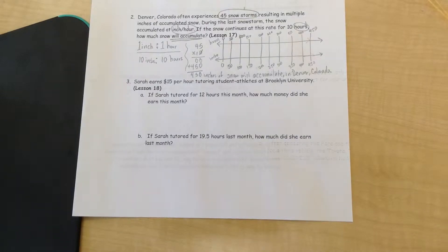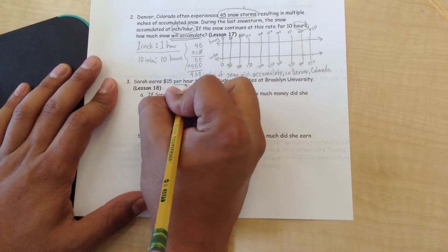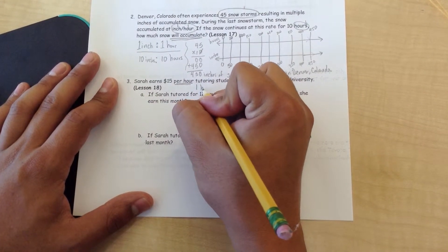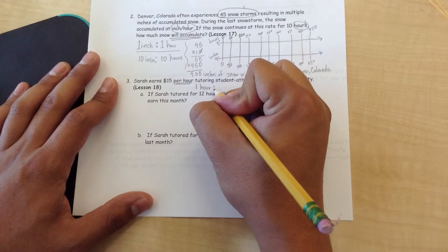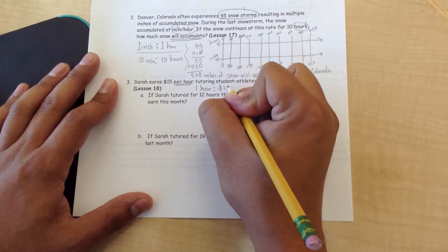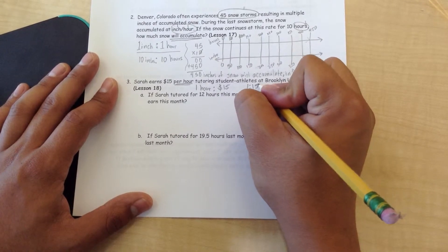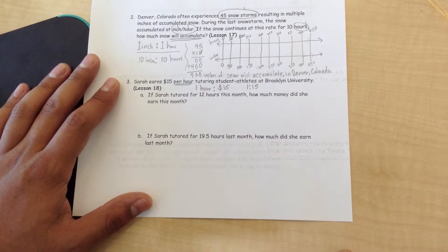All right, Sarah earns $15 per hour tutoring student-athletes at Brooklyn University. The information already gives us, right here, per hour. That is the key. That means that for every one hour, she makes $15. If I wanted to write that in a ratio, 1 to 15.